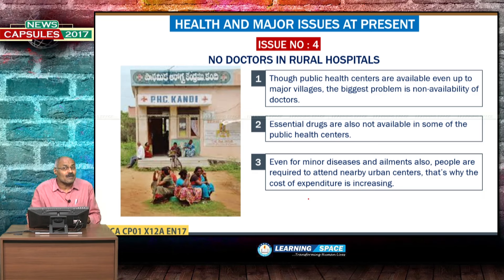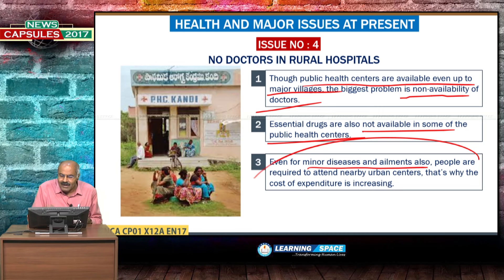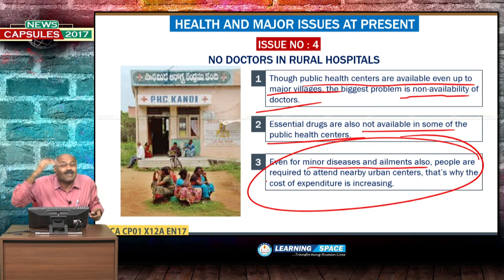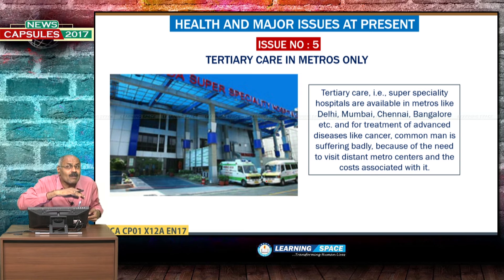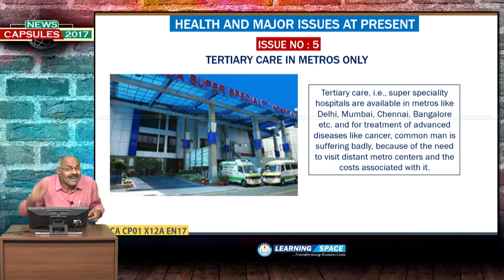The next issue is no doctors in rural hospitals. Though public health centres are available even in major villages, the biggest problem is non-availability of doctors, and essential drugs are also absent in some centres. Even for minor ailments, people are going to nearby urban centres and costs are increasing. The official figures are understated — unofficial figures must be much higher. Furthermore, tertiary care is available only in metro cities like Delhi, Mumbai, Hyderabad, and Chennai, and this must be expanded to at least the district level.